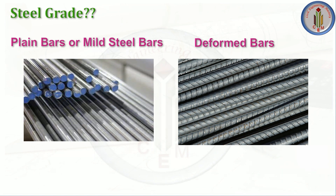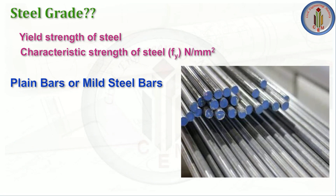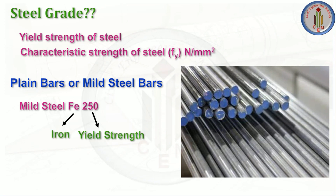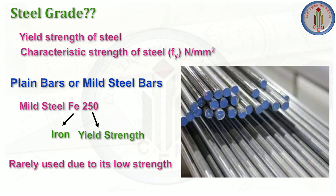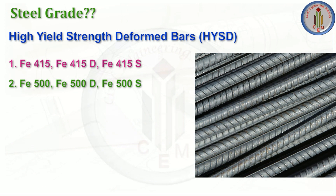For steel grade, we have plain bars (mild steel) and deformed bars, which have ribs or lugs that increase the bond between steel and concrete. In steel grade designation, 'Fy' represents the characteristic yield strength in N/mm². Plain mild steel bars are grade Fe 250, but are rarely used due to low strength. High yield strength deformed bars (HYSD bars) include Fe 415, Fe 415D, Fe 415S, Fe 500, Fe 500D, Fe 500S, Fe 550, Fe 550D, and Fe 600.